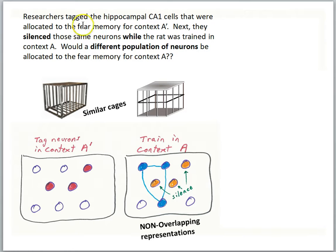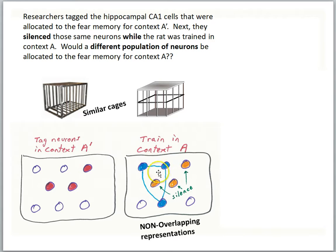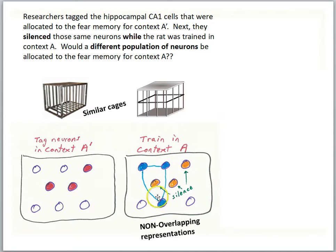Consider another experiment. Researchers tagged the hippocampus CA1 cells that were allocated to the fear memory for context A' again. Next, they silenced those same neurons while the rat was trained in context A. They tagged the neurons and inserted the light-activated proteins in context A', making those cells the engram for A'. But now they silenced those very cells while the animal was trained in context A. The question was: would a different population of neurons be allocated to the fear memory for context A? By silencing the A' engram cells, the researchers wanted to know whether the brain would be forced to allocate other neurons for the fear memory to context A — would there be non-overlapping representations?